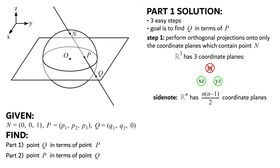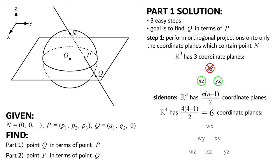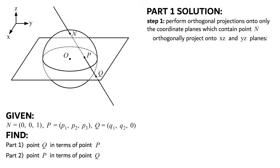As a fun side note, for R to the n, there are n times (n-1) over 2 coordinate planes in that space. For example, in R4, there are six coordinate planes: the wx, wy, xy, wz, xz, and yz planes. If we were to stereographically project the hypersphere from R4 down to R3 while still holding the point n in the z-axis at the north pole, we would only need to consider orthogonal projections onto the wz, xz, and yz planes. This concept can then be generalized to n dimensions. Let's now proceed with the orthogonal projections onto the xz and yz planes.